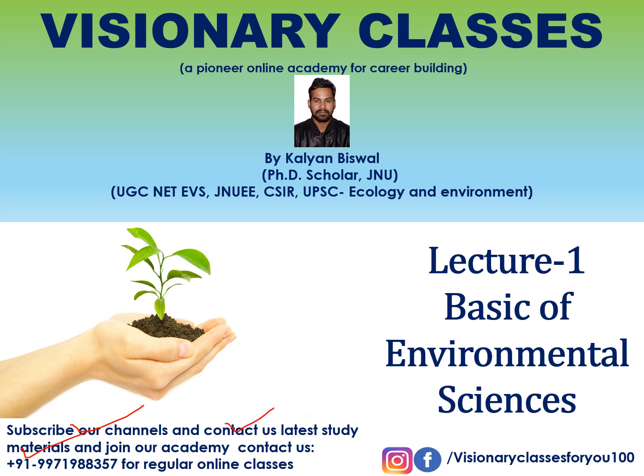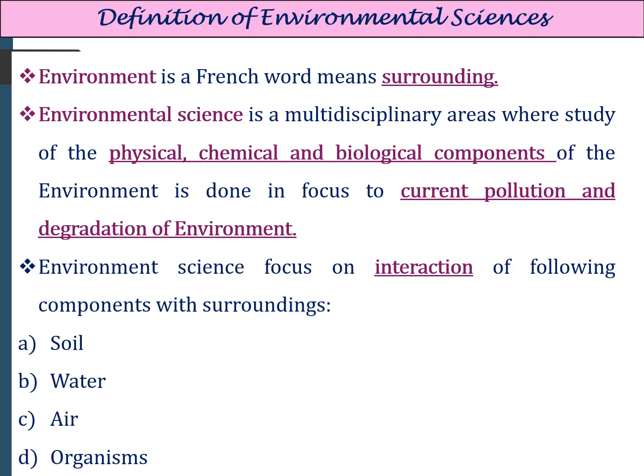Today I will teach you about the basics of environmental sciences. The first thing we should know about environmental science is: what is the environment? Environment is a French word that comes from the word meaning 'surrounding' — what we see around us or what encircles around us.